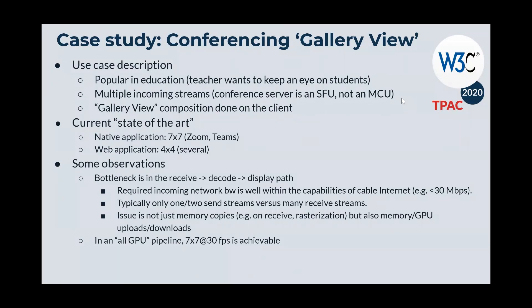This is a use case where the memory operation is the bottleneck — each copy directly reduces performance. It's worth noting there is no machine learning on the receive path; that occurs only on the send path, for example with background blur or custom backgrounds.